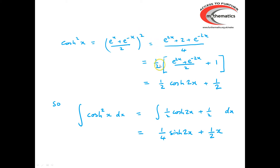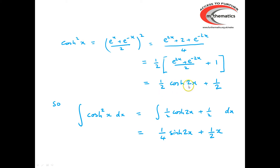Multiplying out top and bottom gives (e²ˣ + 2 + e⁻²ˣ)/4, which is the same as ½ × (e²ˣ + e⁻²ˣ)/2 + ½, which equals ½(cosh 2x + 1) — so ½ cosh 2x + ½. Therefore the integral of cosh² x is ¼ sinh 2x + ½x.